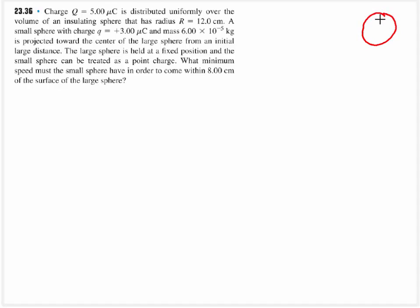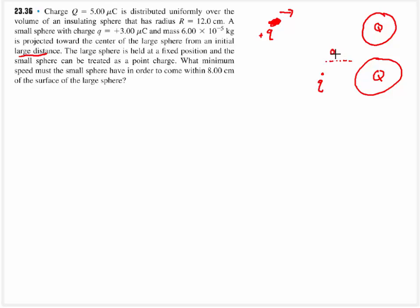Problem 2336: we have a positive charge on an insulating sphere. We take another positive charge and launch it toward the sphere from an initial large distance — that's a key phrase to look for. The test charge comes to a closest distance of 0.08 meters from the sphere's surface, and the radius of the sphere is 0.12 meters. We can't use kinematics here because the force is always changing, so we need energy conservation.